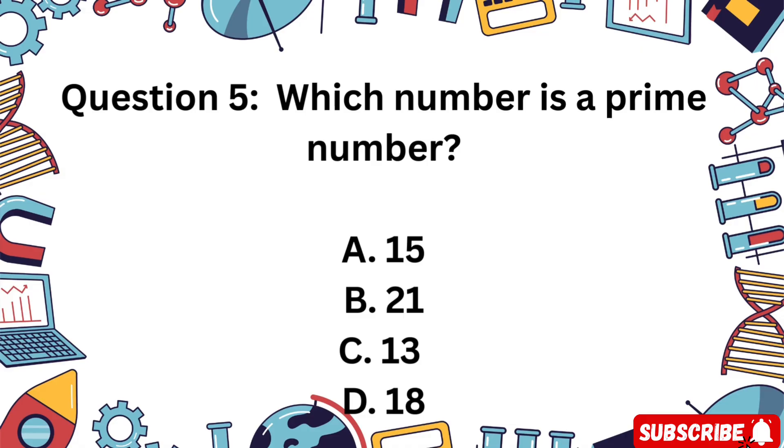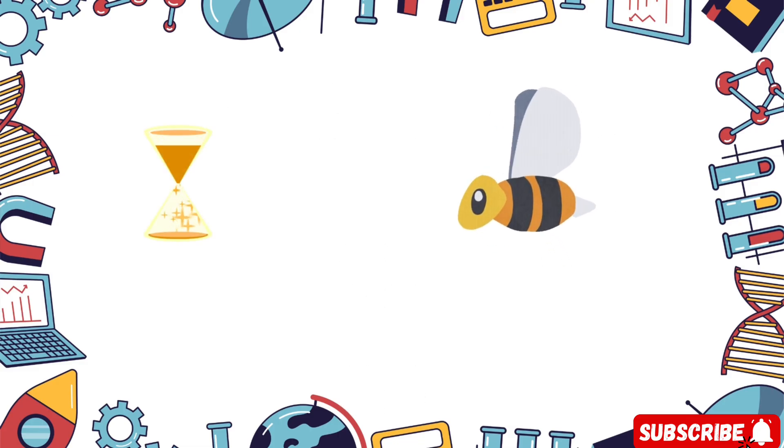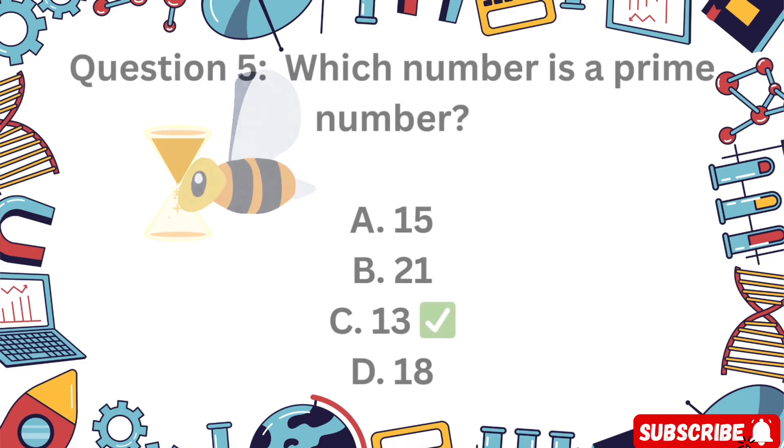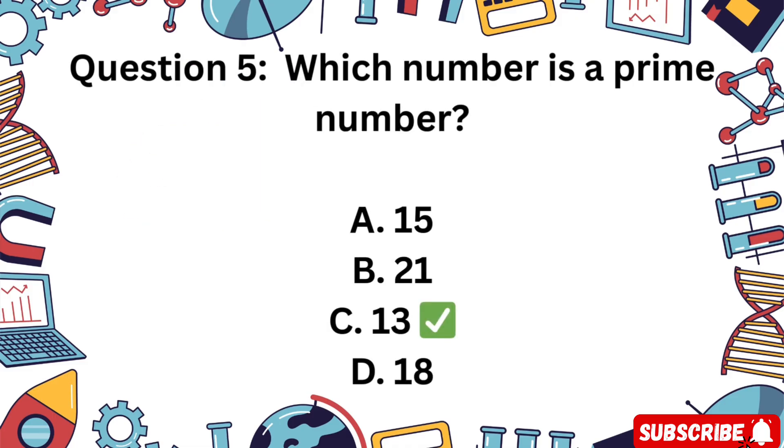Question 5: Which number is a prime number? Is it A 15, B 21, C 13, or D 18? Yes, 13 is only divisible by 1 and itself.